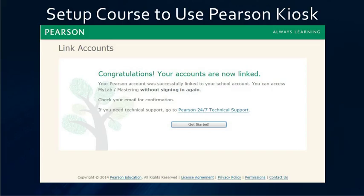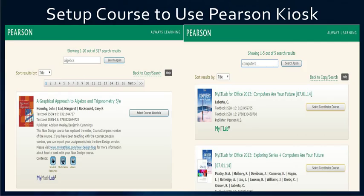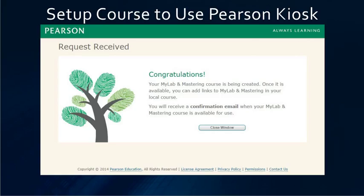Once you are logged in, click on get started. Then you have to choose from an existing course, or search for a new book to start a new course. You will either have select course materials or select coordinator course come up when you search for your books. After you make your choice, fill in what you want your lab to be called, when it starts, when it ends, and then click continue. You will get a congratulations email.